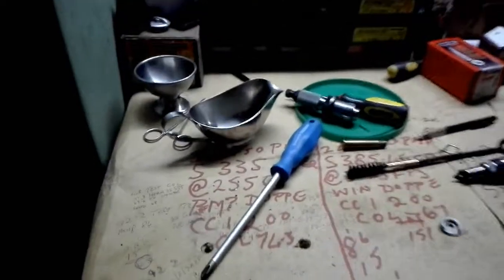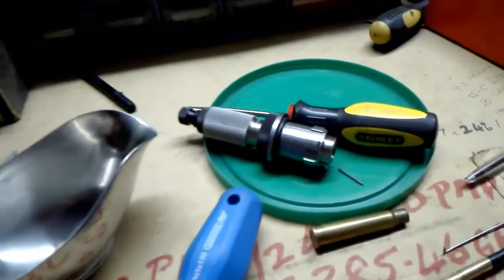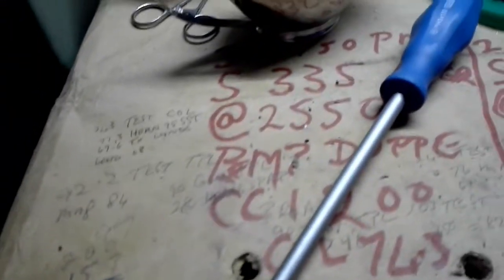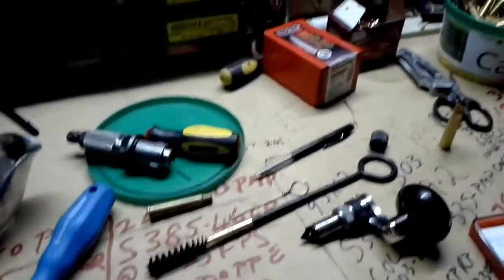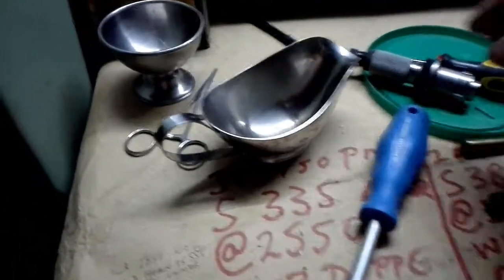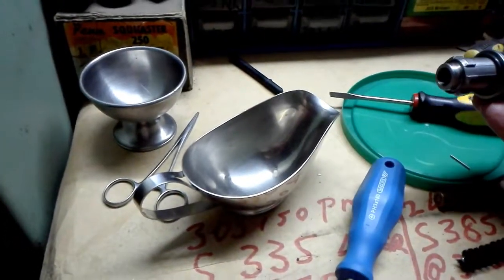The next step would be to full length resize these cases. Seeing that you have now put some pressure on them, you could have deformed the neck and the mouth a little bit with the screwdriver and the hydraulic pressure. So I use a Redding full length resizing die in order to resize these cases. You will see, let me show you.